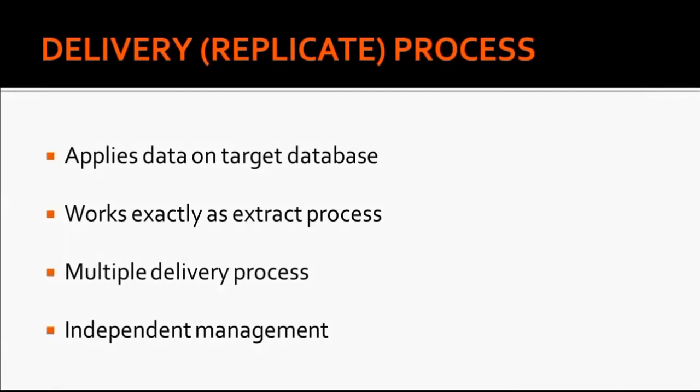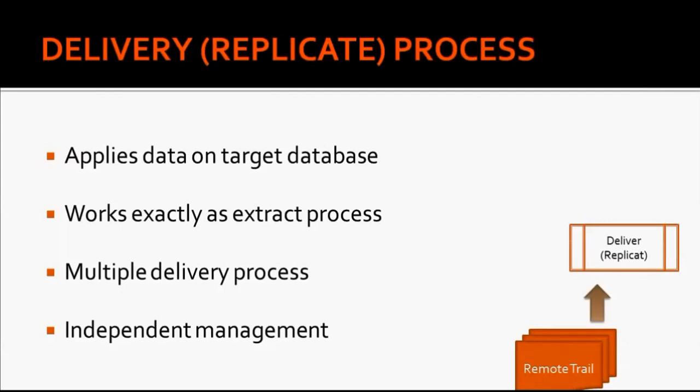The next component of Golden Gate is the delivery or replicat process. This process is responsible for applying data to the target database. The replicat process applies data changes to the target database exactly how they were written by the extract process at the source server. Similar to the extract process, we can configure multiple delivery processes on the target server. The replicat process can be independently managed, meaning you can start or stop any replicat process as per the requirement.